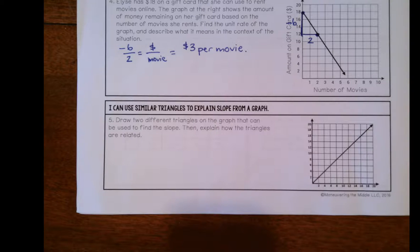All right, draw two different triangles on the graph that can be used to find slope, then explain how the triangles are related.